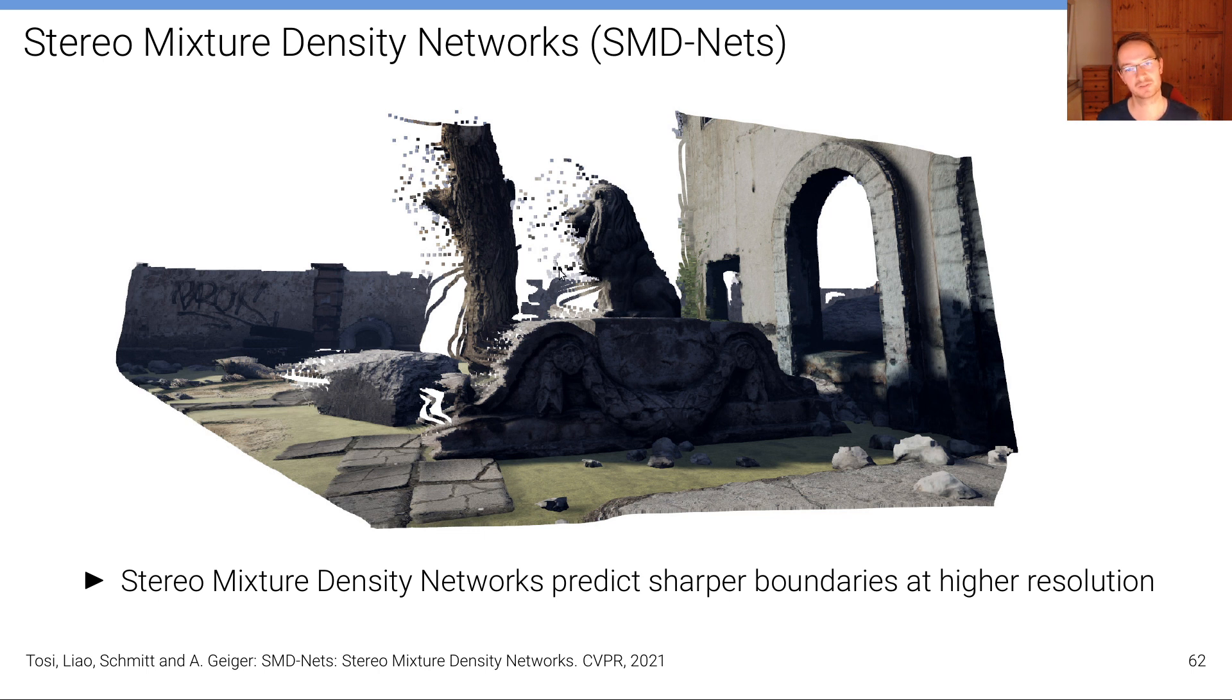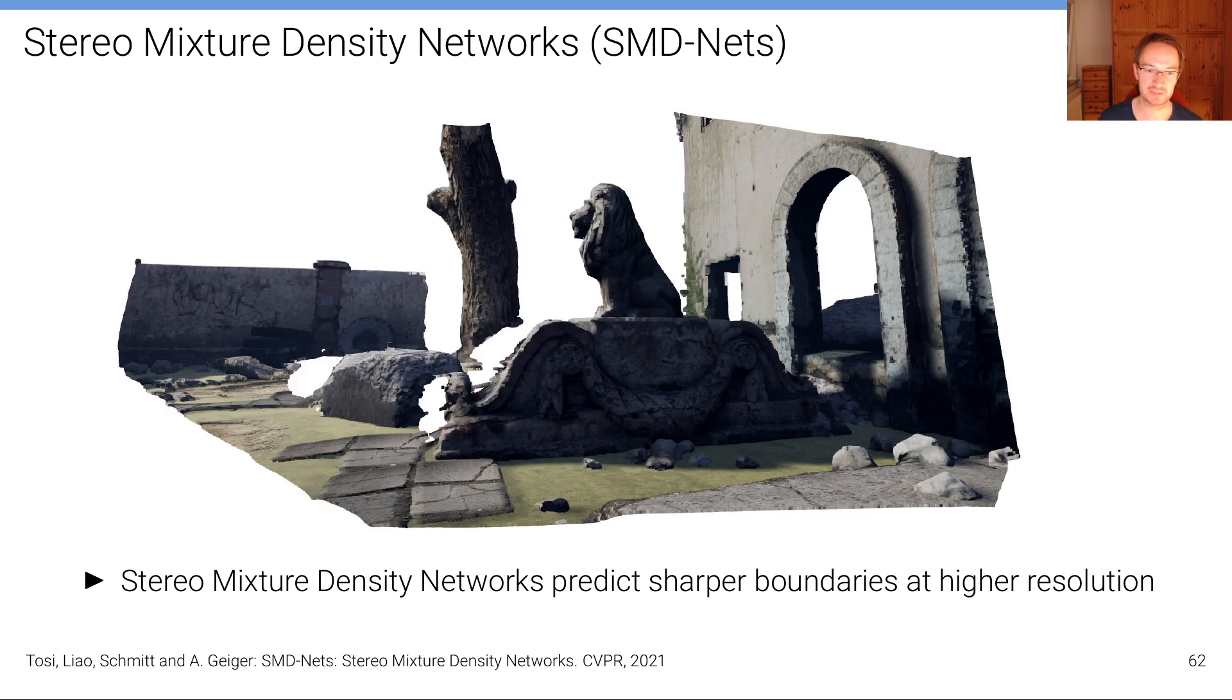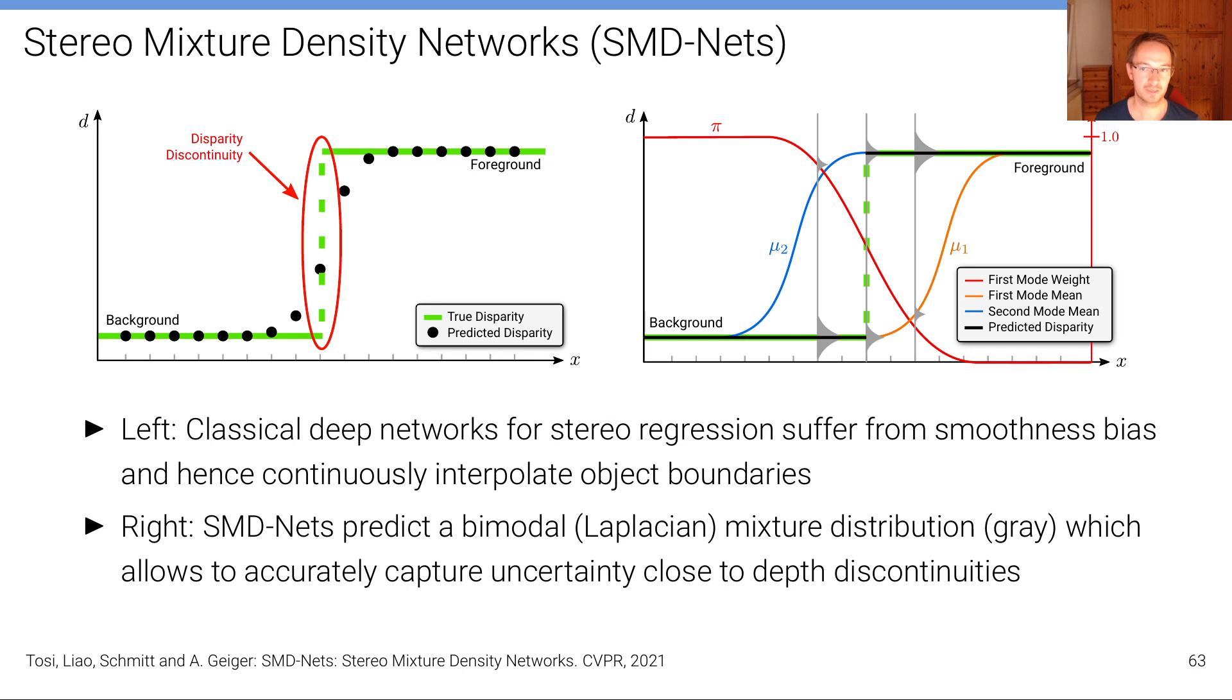that there's a bleeding at the edges of objects and this is illustrated here. So this is a standard, a state-of-the-art standard model called HSM that produces at the disparity discontinuities such bleeding artifacts, flying pixels because of the smoothness properties of neural network based regression basically.